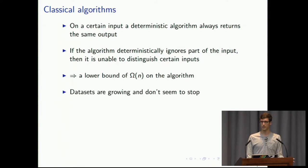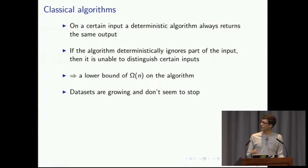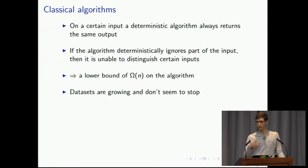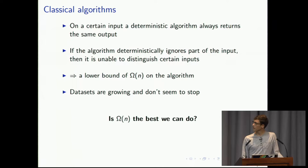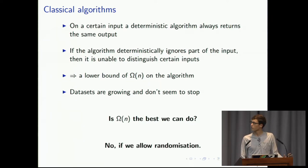However, datasets are growing and they don't seem to stop growing. So the question is, is that a lower bound we can't go faster than? Can we go sublinear? And the answer is yes — we can go faster if we allow for randomization.